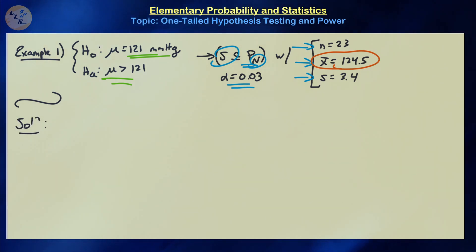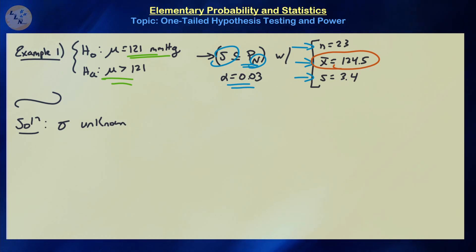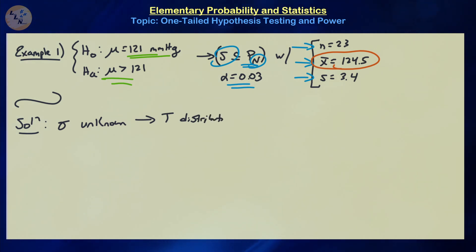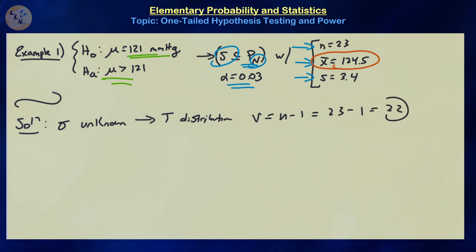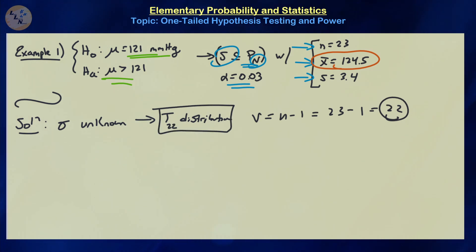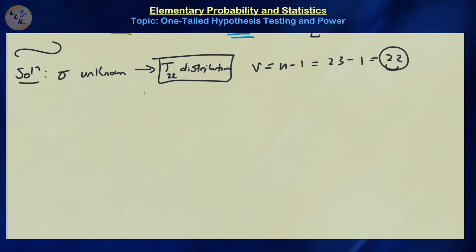Notice that sigma is unknown, so we can't use the z-distribution — we need to use the t-distribution, where our degrees of freedom v equals n minus 1, which is 23 minus 1, equal to 22. So we're going to be using a t₂₂ distribution for our p-value calculations and graphs, which is relatively similar to the normal but with wider tails.